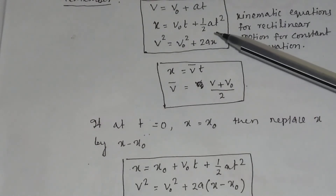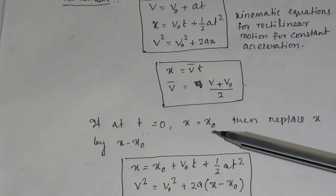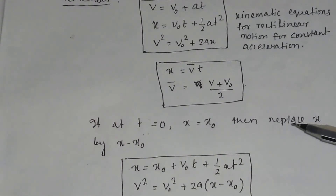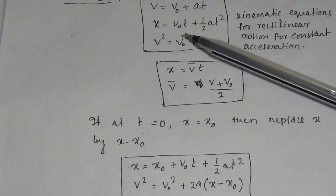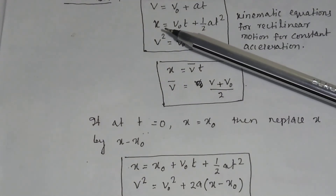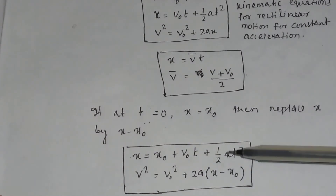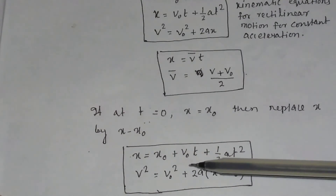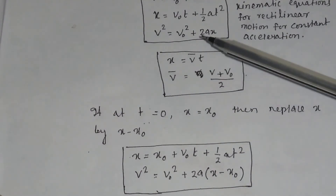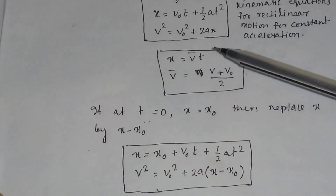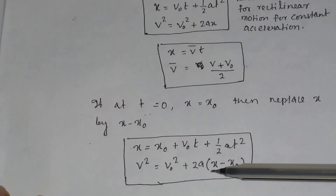In this case we have taken time t equal to 0 and x equal to 0 at the start. But if at time t equals 0 the position of the body is not 0 — that is, x equals x0 — then we have to replace x by (x minus x0). So in the displacement equation we write (x minus x0) instead of x, giving x minus x0 equals v0·t plus half·a·t². Similarly, the third equation becomes v² equals v0² plus 2a times (x minus x0).